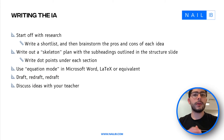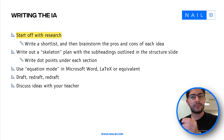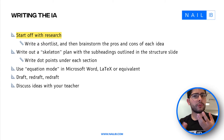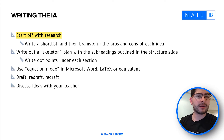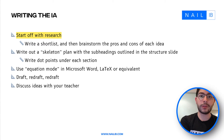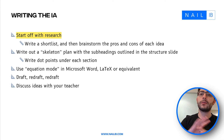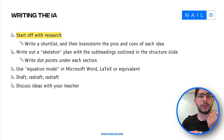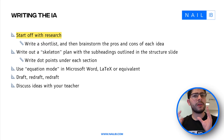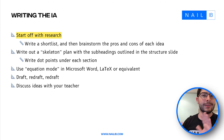When writing the IA, research is very important. Once you've created a shortlist, make a pros and cons section for each idea — consider whether a topic is too hard, or alternatively too simple. Keep an open mind and brainstorm the good and bad of each option. Potentially discuss it with your teacher; they can't say too much, but they may be able to give vague advice, point you in the right direction, or recommend something to read.